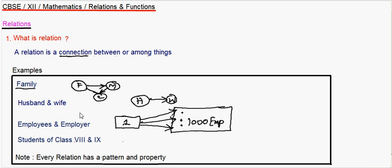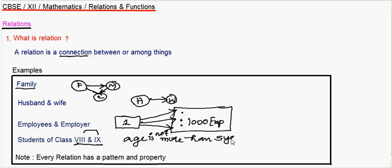Next, if we take some students of class eight and nine, here also we can form a number of relations. For example, if we take the difference between their ages — the difference between the age of a class eight student and a class nine student will not be more than five years — so they form a relation. And even if you take, for example, a student of class eight can be the brother of a student of class nine. So like that you can form a number of relations. These are some of the examples for relation.